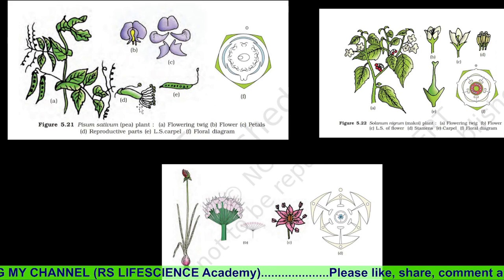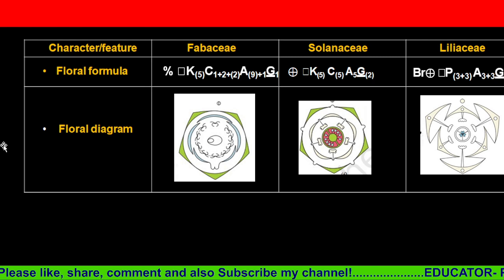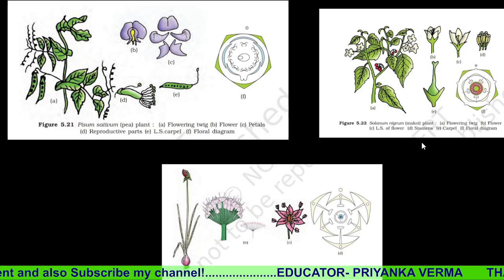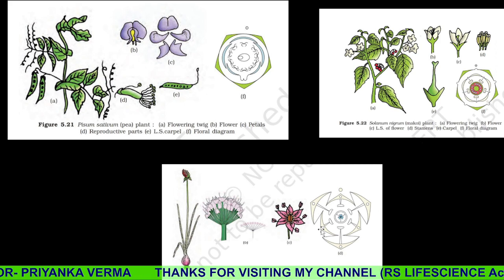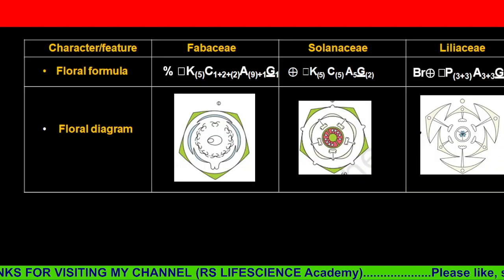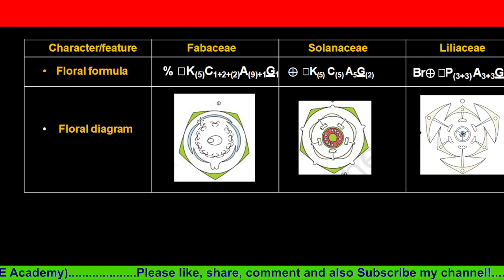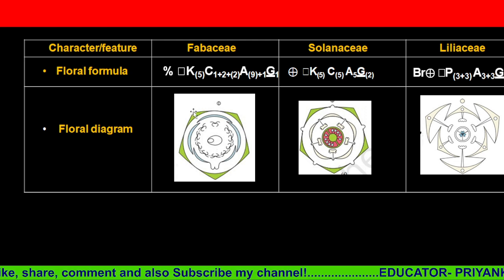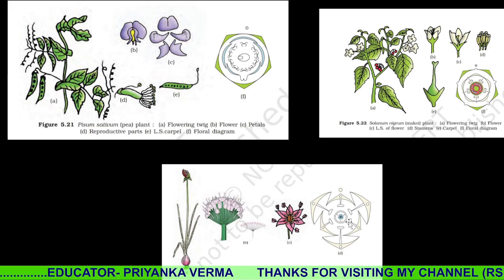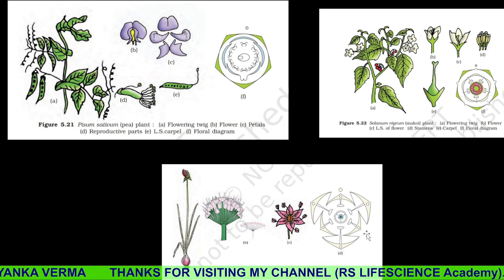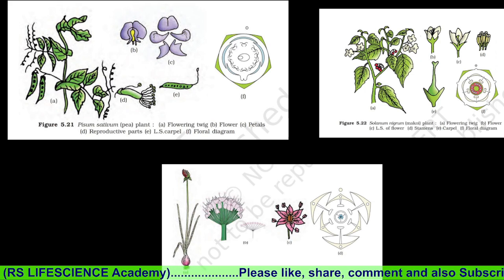Here is the diagram. This is the Liliaceae floral diagram. This is the floral formula — P comes in the perianth. In the Solanaceae family, this is Solanum nigrum — the makpil plant. It is bi-locular. Comment in the comment section if you understand. In the Solanaceae family you have potato and in the Fabaceae family various pulses; in the Liliaceae family you have onion. This is the floral formula and diagrammatic formula — this is Allium cepa, the scientific name for onion.